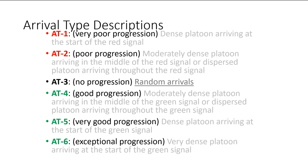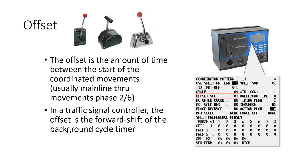Arrival Type 1 is the worst case: you have a dense platoon but they all arrive right at the start of red, so they all wait the maximum time. Random arrival is actually better than a dense platoon arriving at the start of red. Arrival Type 6 is best: a very tightly packed group of cars all arrive right at the start of the green signal and none of them have to wait at all. That's what we're aiming for.